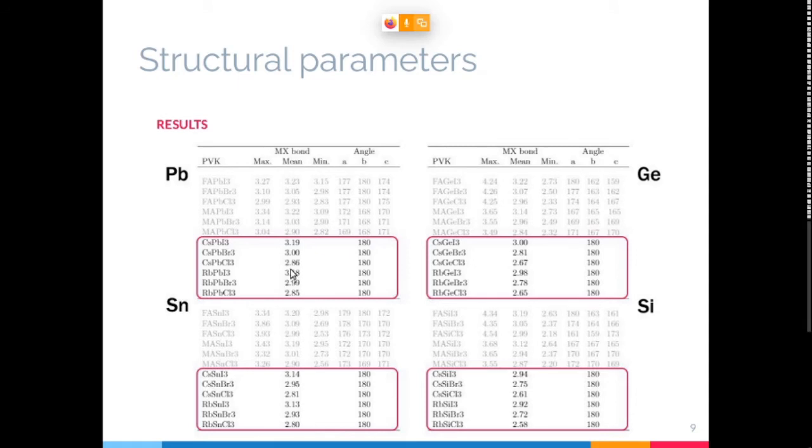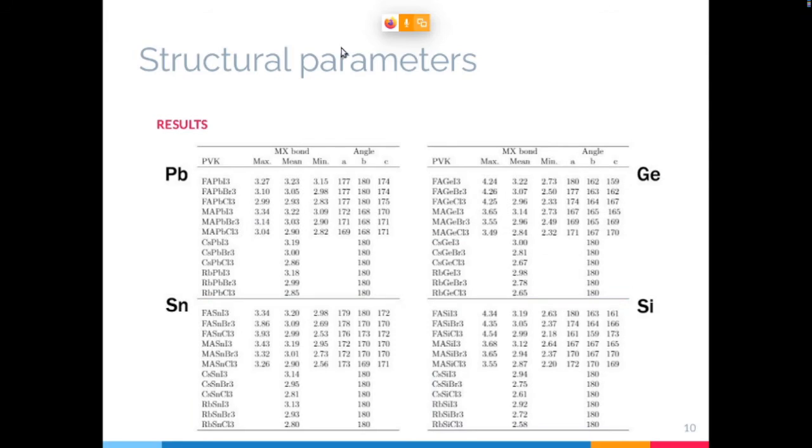That's not the case for the hybrid perovskites, which contain these molecules formamidinium and methyl ammonium, which break this cubic symmetry. So you see some dispersion in the values of bond and angle, and this distortion actually increases the smaller the metal atom is.